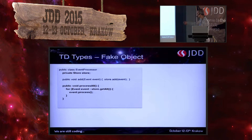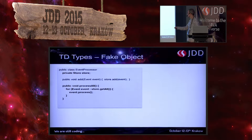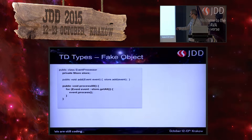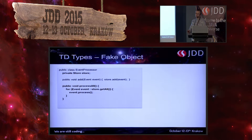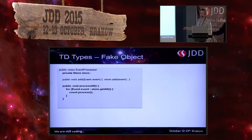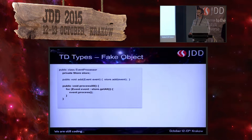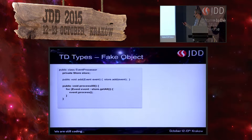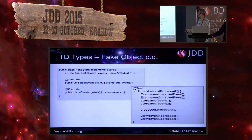Another is the fake object. There is an example class, event processor. It can have something like a store. This class is used to store events, and whenever we invoke the process-all method, we retrieve all stored events from our store and process each. To test it, we can use a fake object. A fake object is the simplistic implementation that fulfills our assumptions over the object. What we want to fake is our store — we need two methods: one to store, one to retrieve. We don't care whether it's stored in a database, in memory, in a CSV document. It only needs to store it somewhere. The simplest implementation would be based on a list — adding an element to the list and returning all events.